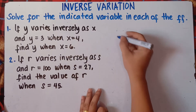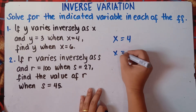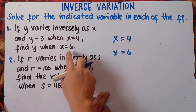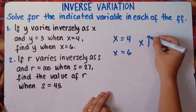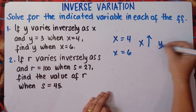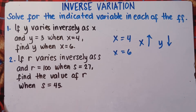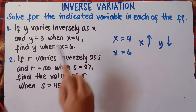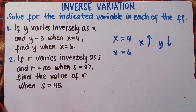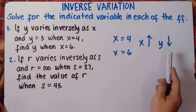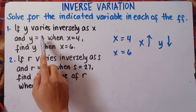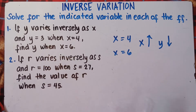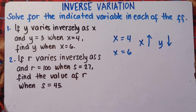Check your x value: x goes from 4 to 6, so your x value increases. Therefore, our y value will be decreasing. So you already have an idea that your y answer should be less than 3, since x increases and y goes in the opposite direction.